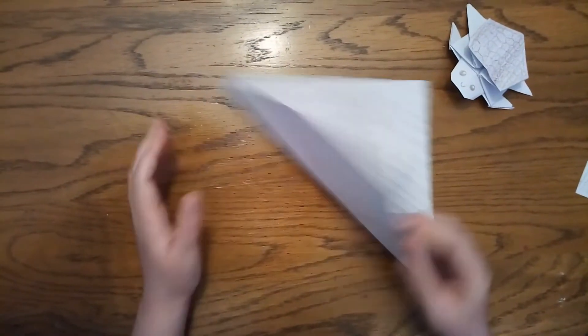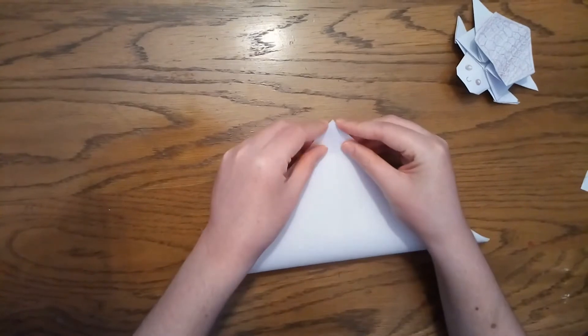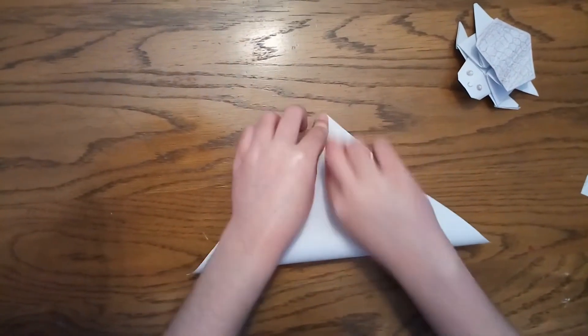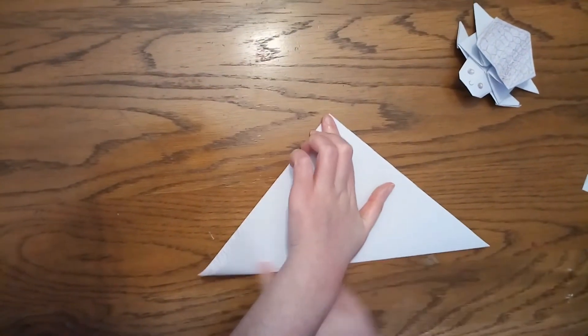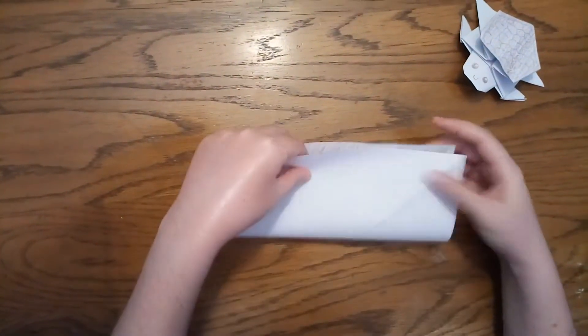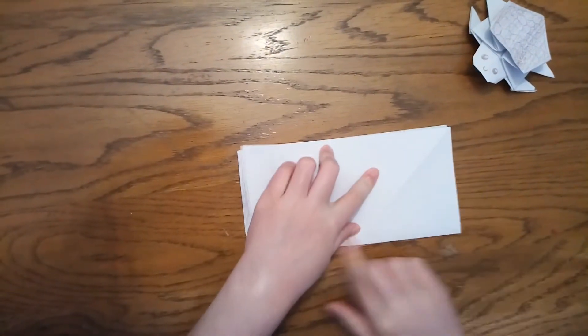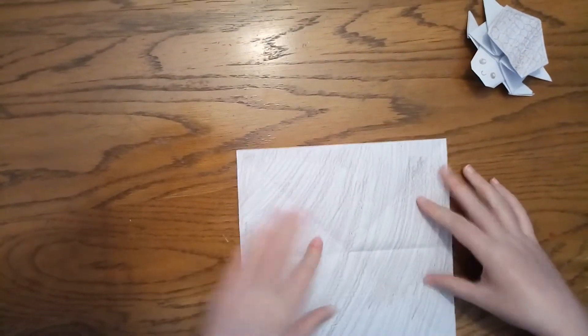And we already have our first fold in our piece of paper. The next fold is going to be going the other way to make kind of like an X with the two folds. So they're nice and creased. Open it back up. Fold it in half.